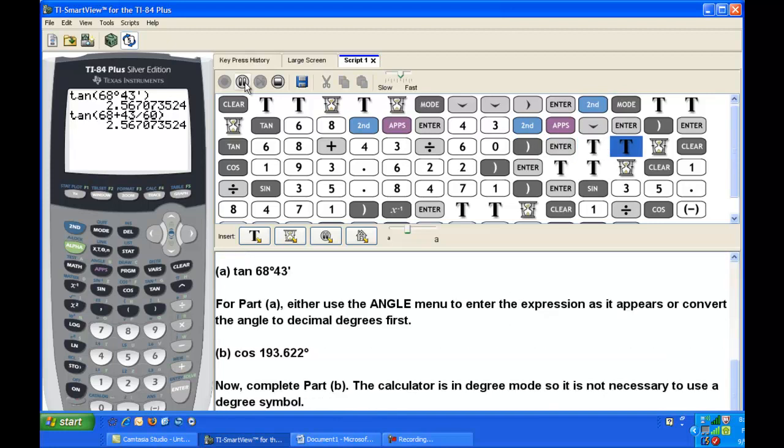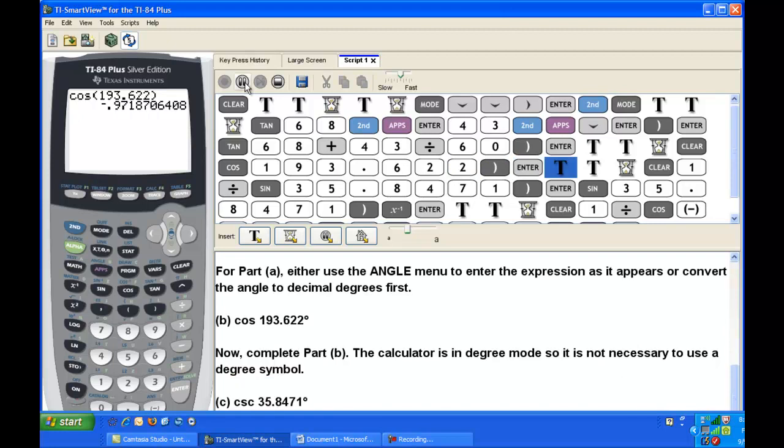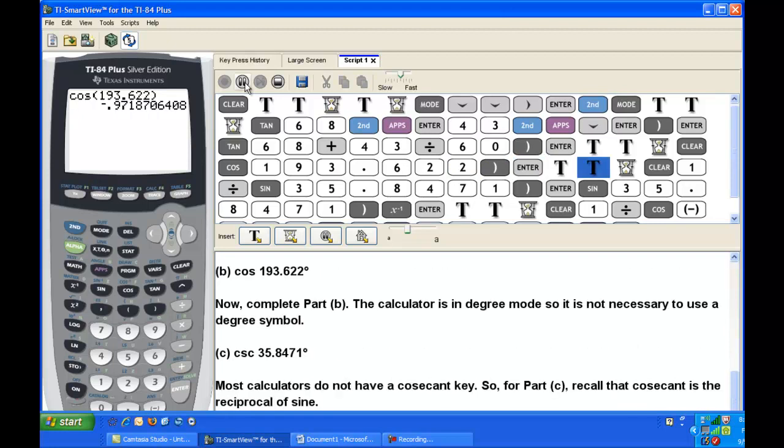For part B, we're going to evaluate the cosine of 193.622 degrees. So just enter cosine of 193.622 and then press enter. You can see that the cosine of 193.622 is approximately negative 0.97.